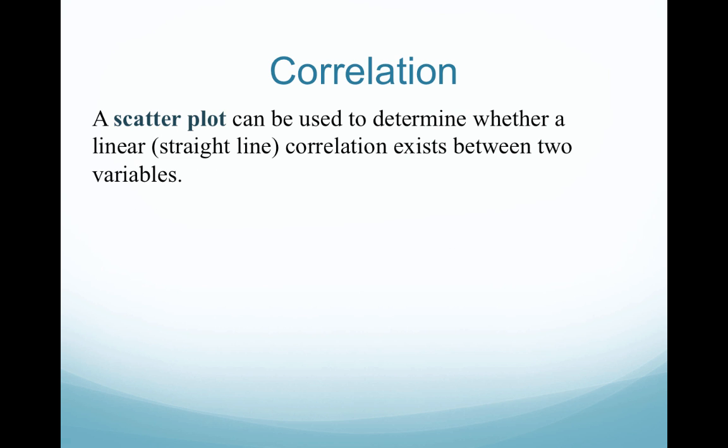We're going to use a scatter plot. It can be used to determine whether a linear — meaning a straight line — correlation exists between two variables.